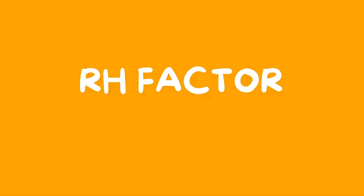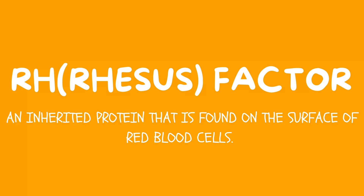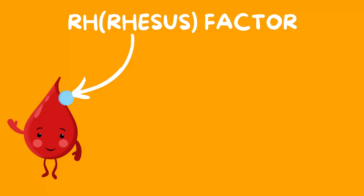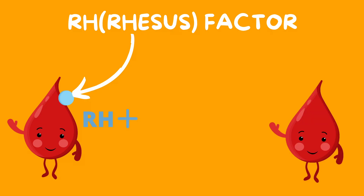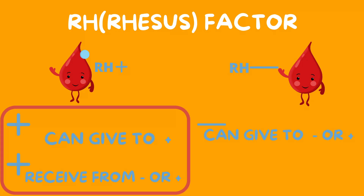Lastly, I'd like to explain the Rh factor, also known as the rhesus factor. This is a protein found on the surface of red blood cells. Blood either has the Rh factor or it doesn't. If it does have the Rh factor, then this blood is known as positive. If the blood does not have the Rh factor, then this is known as negative. A positive Rh factor can give to another positive, and it can receive from a negative or a positive. A negative Rh factor can give to a negative or a positive, but it can only receive from another negative.